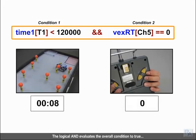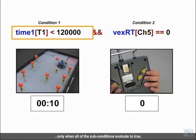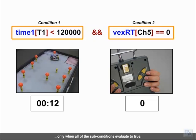The logical AND evaluates the overall condition to true only when all of the subconditions evaluate to true.